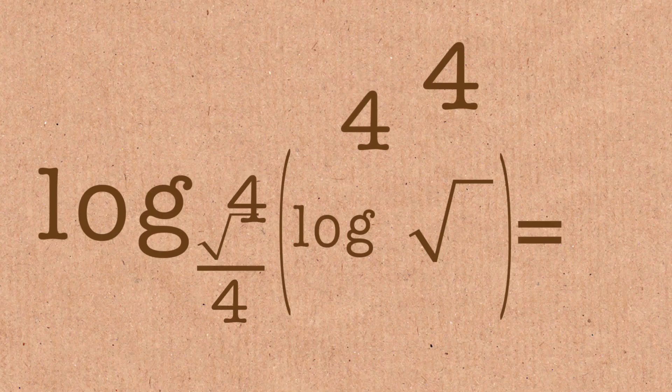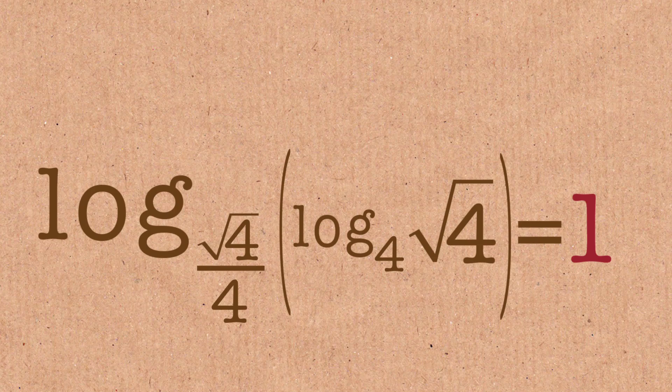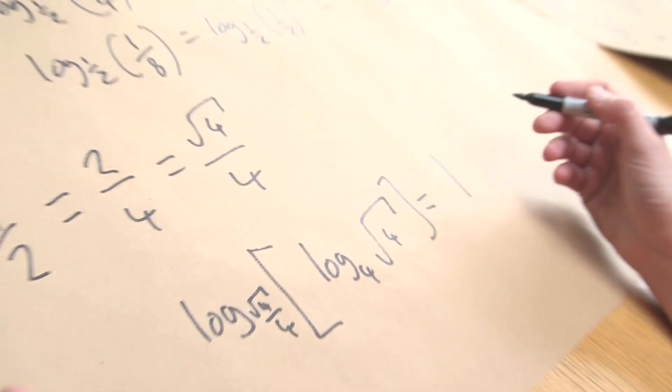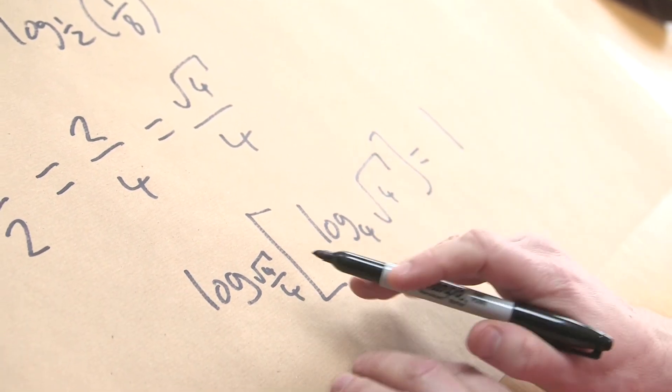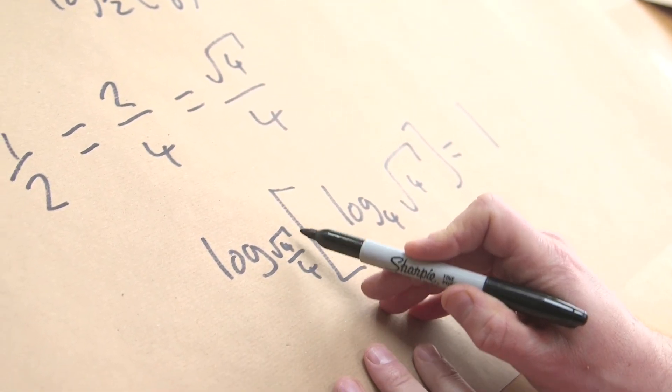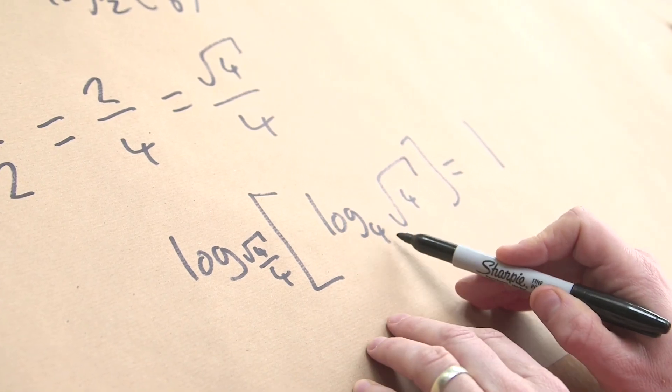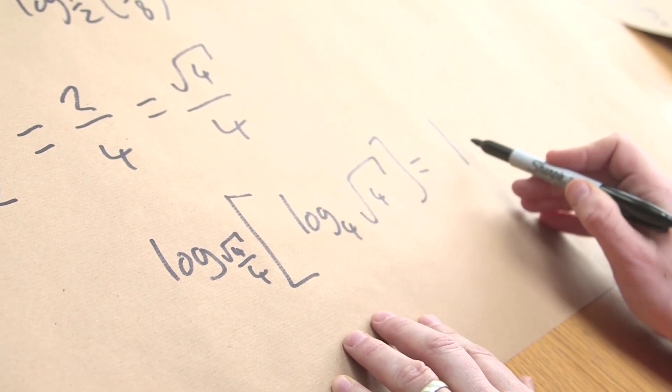So you used all 4 fours then? So I've got all 4 fours. Earlier I showed you how you can use the 4 fours to make 1 in a very simple way. 4 divided by 4 plus 4 minus 4 is 1, but you can also do it here. Log to the root 4 over 4 of log to the base 4 of root 4 is 1.